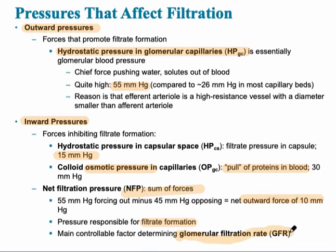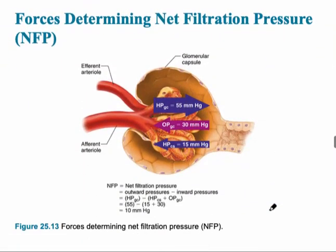This pressure is referred to as the GFR, the glomerular filtration rate. If a kidney is working properly and the nephron is healthy, the GFR should be about 10 millimeters of mercury. The diagram shows the 55 mmHg outward pressure, the 30 mmHg osmotic pressure pulling inward due to proteins in the blood, and a small capsular hydrostatic pressure, all resulting in a net filtration pressure of 10 millimeters of mercury.